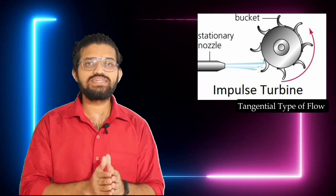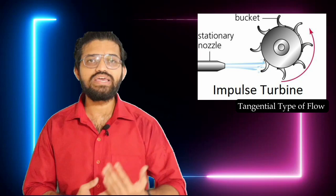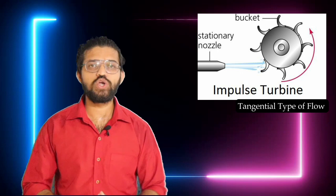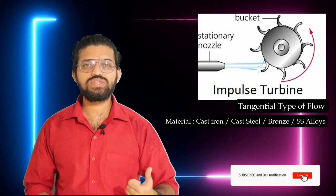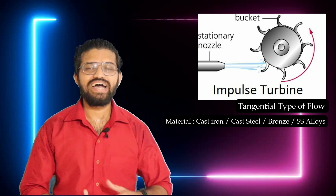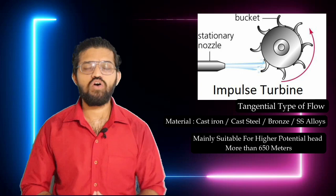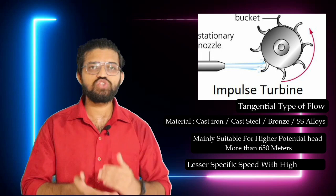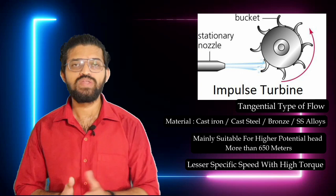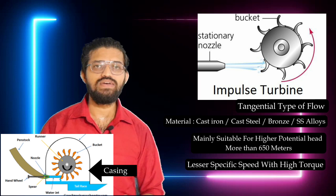This type of turbine is a tangential flow type, where the water jet strikes at the tangent of the Pelton wheel. The material of the Pelton wheel can be cast iron, cast steel, bronze, or various alloys. This turbine is mainly suited for higher potential heads — specifically, heads greater than 650 meters. The specific speed of the turbine is on the lower side, varying from 60 to 100.